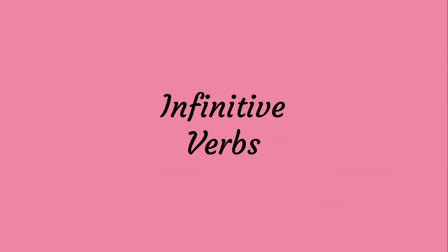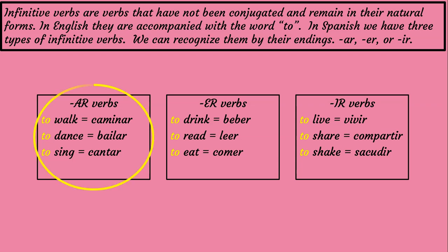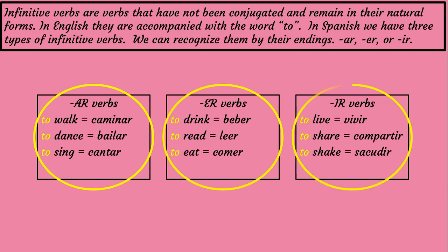We're going to start with the infinitive verbs. Infinitive verbs are verbs that have not been conjugated and remain in their natural forms. In English, they are accompanied with the word 'to.' In Spanish, we have three types of infinitive verbs: AR verbs, ER verbs, and IR verbs. And we can recognize them by the endings AR, ER, and IR.